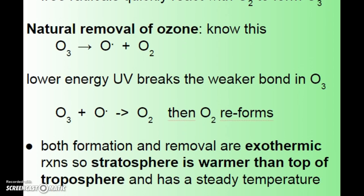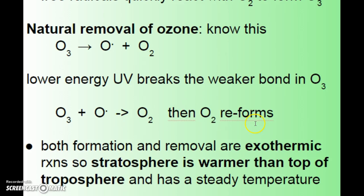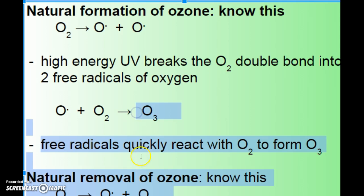Ozone is naturally removed when O3 is also broken — one free radical broken off, leaving O2 behind. Then O3 combines with that free radical and breaks back down into two O2 molecules.